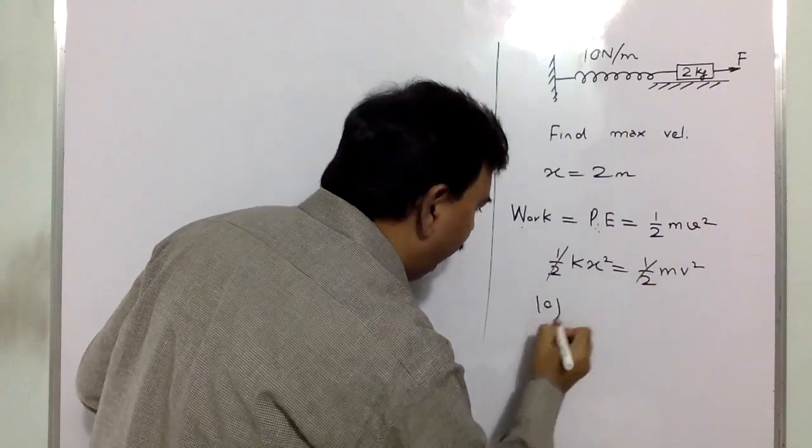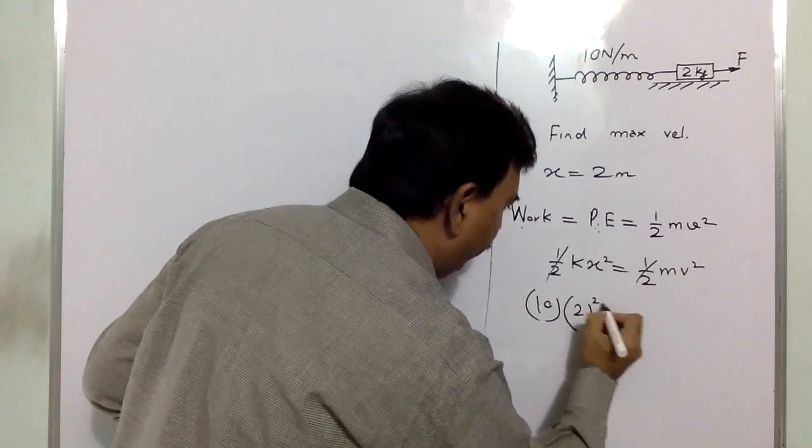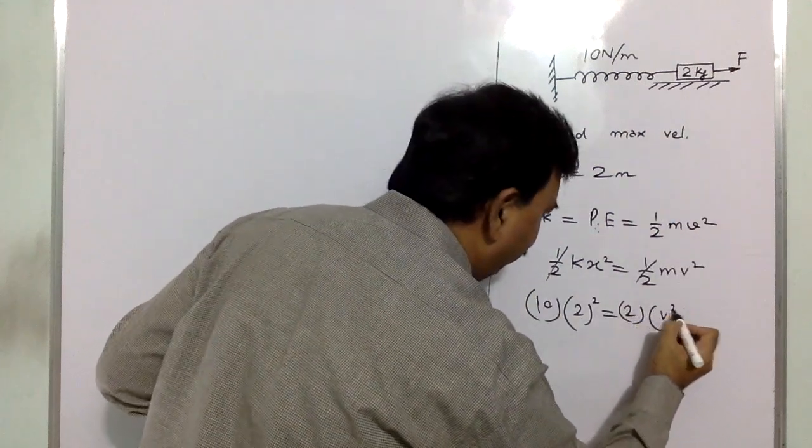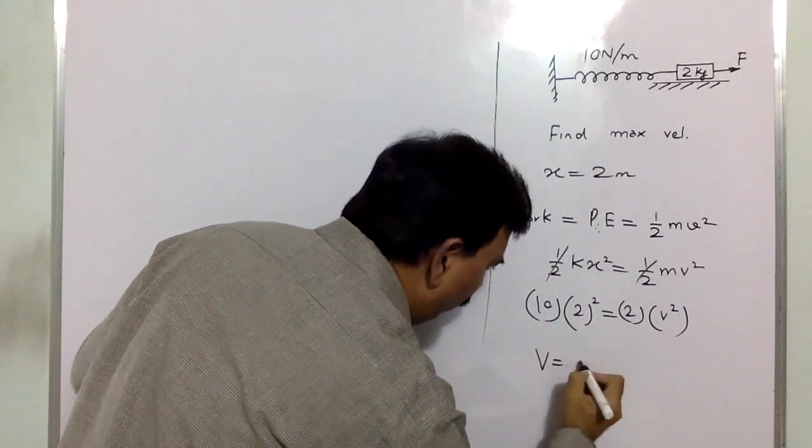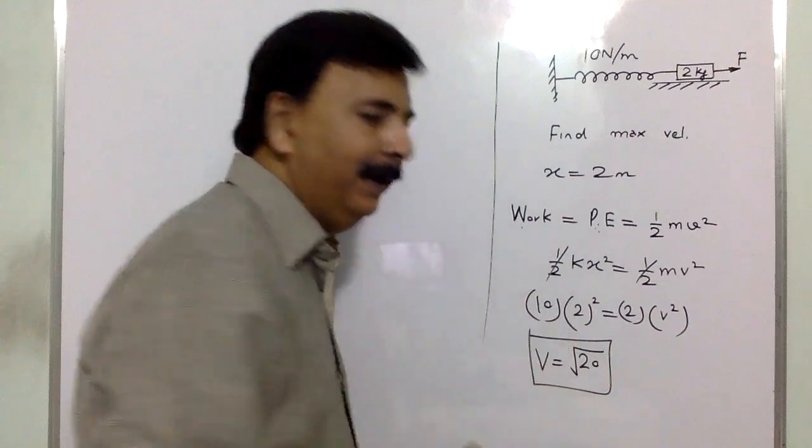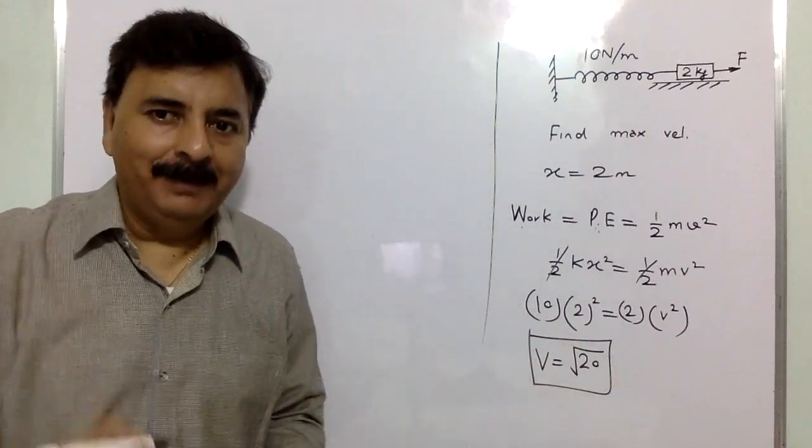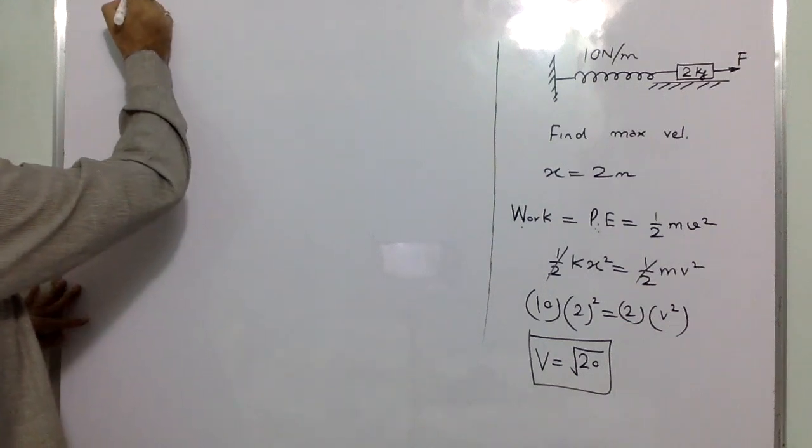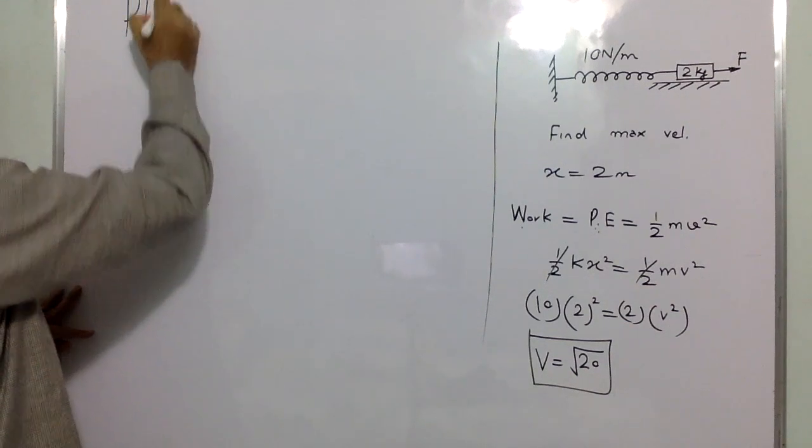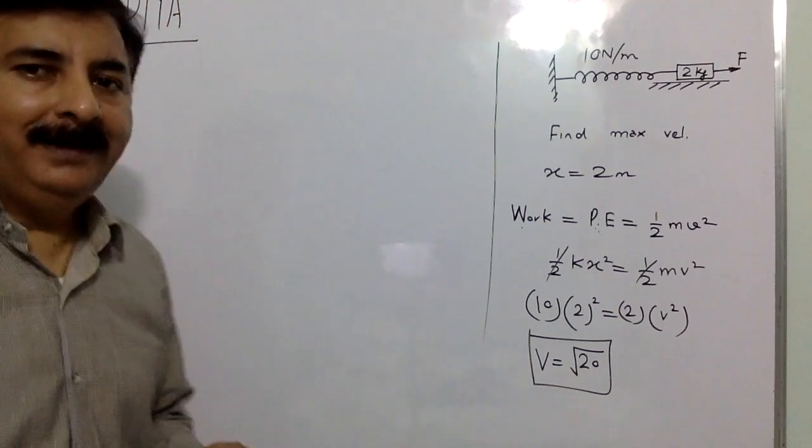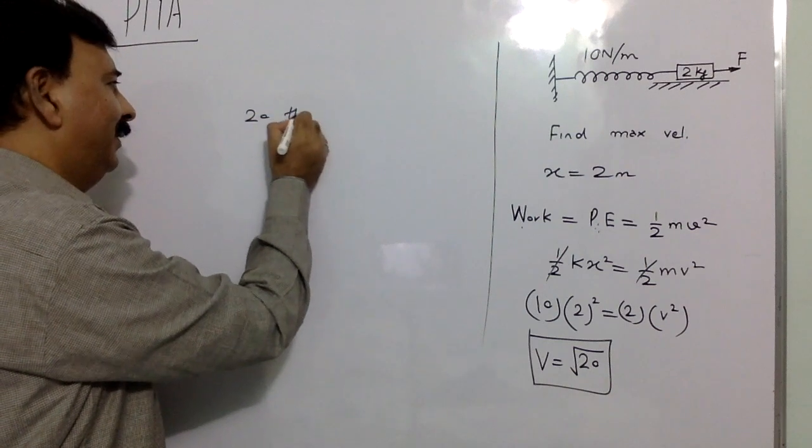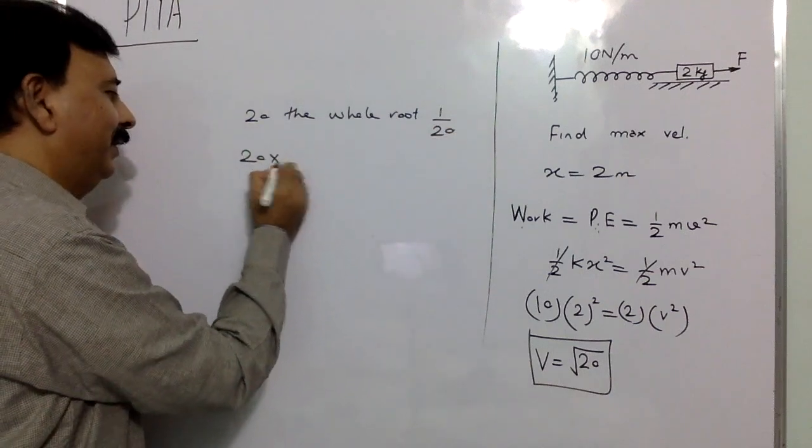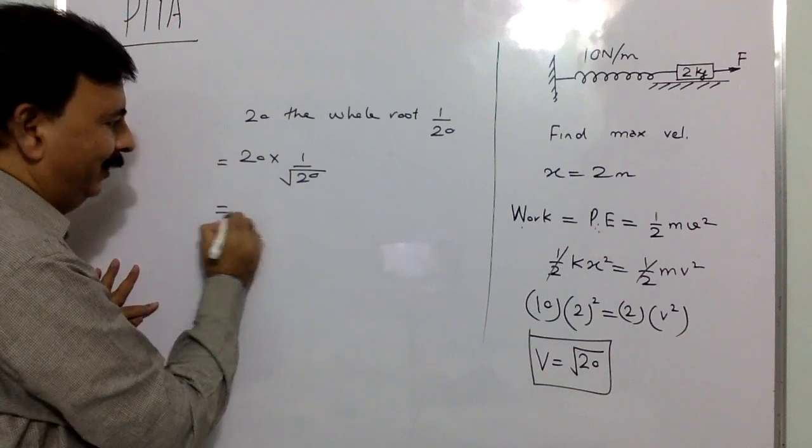So what is the potential energy? It is half kx square, that must be equal to half mv square. What is k is 10, what is x is 2 square, what is m is 2 kg, what is velocity, we have to find. So very clearly v is root 20. And the topper from the last 2-3 DNA, the topper is a girl whose name is Pia.